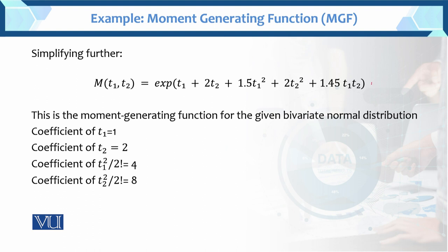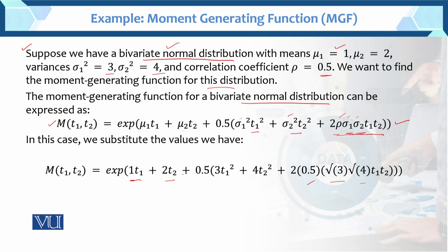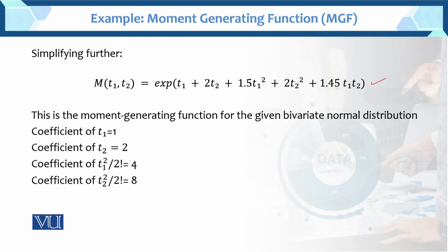This is the moment generating function: exponential of t1 + 2t2 + 1.5·t1² + 2·t2² + 1.5·t1·t2. Here 3 × 0.5 = 1.5 for t1², and 0.5 × 4 = 2 for t2². After this simplification, this is the moment generating function for the given bivariate normal distribution.